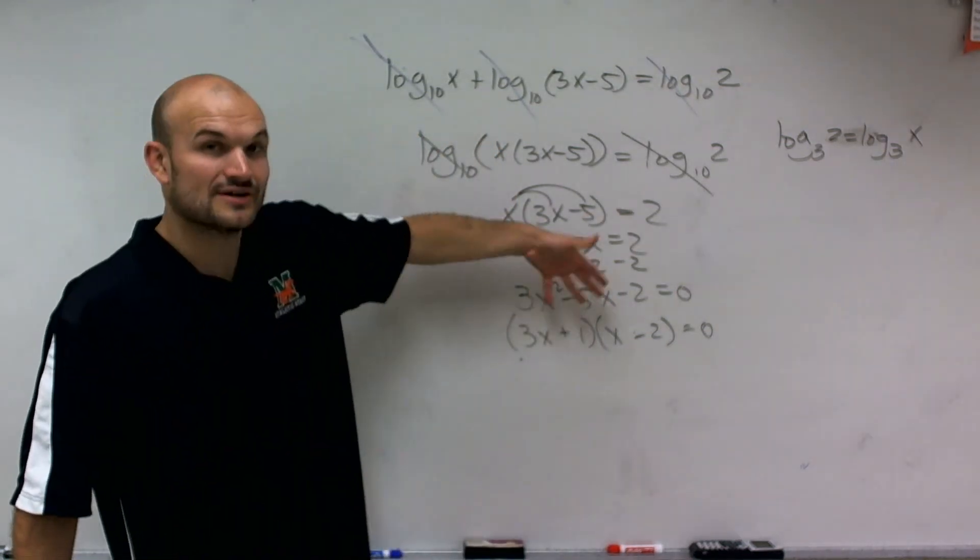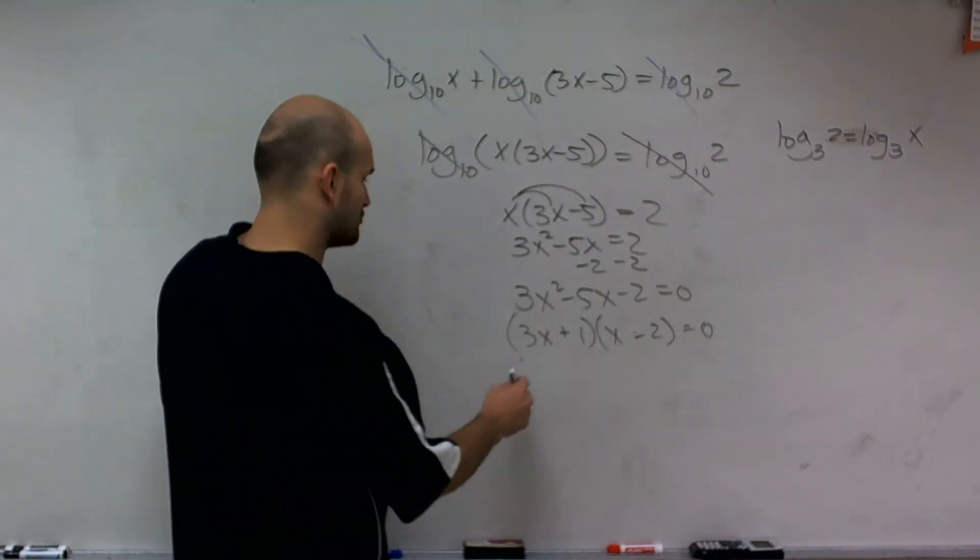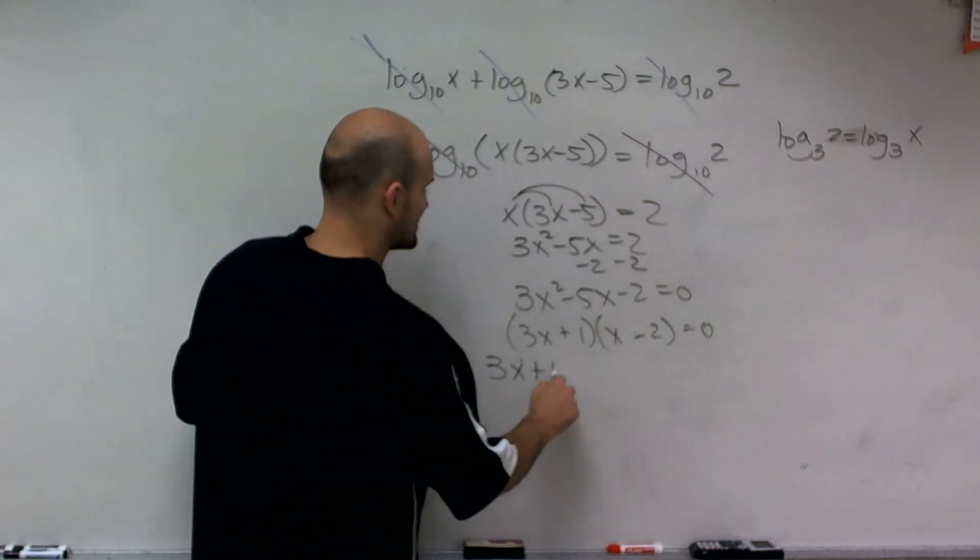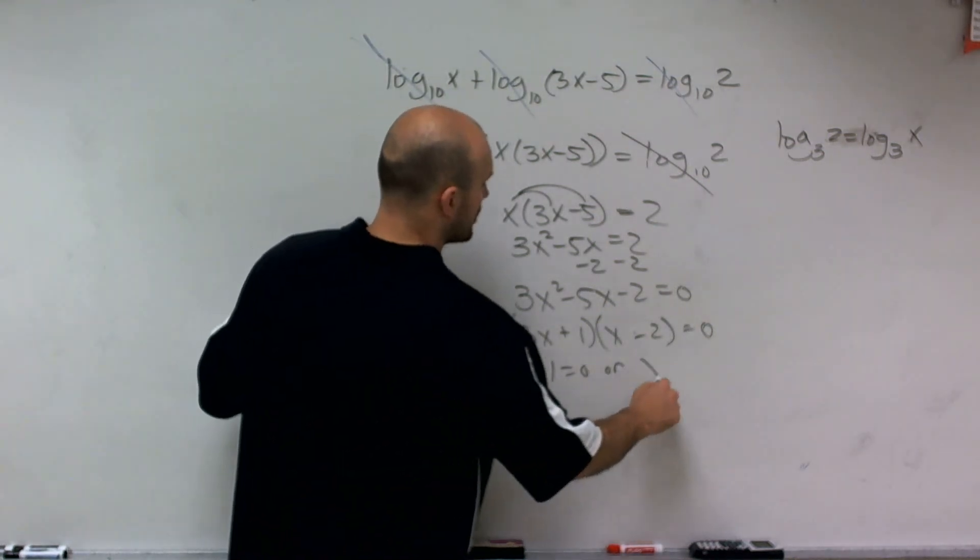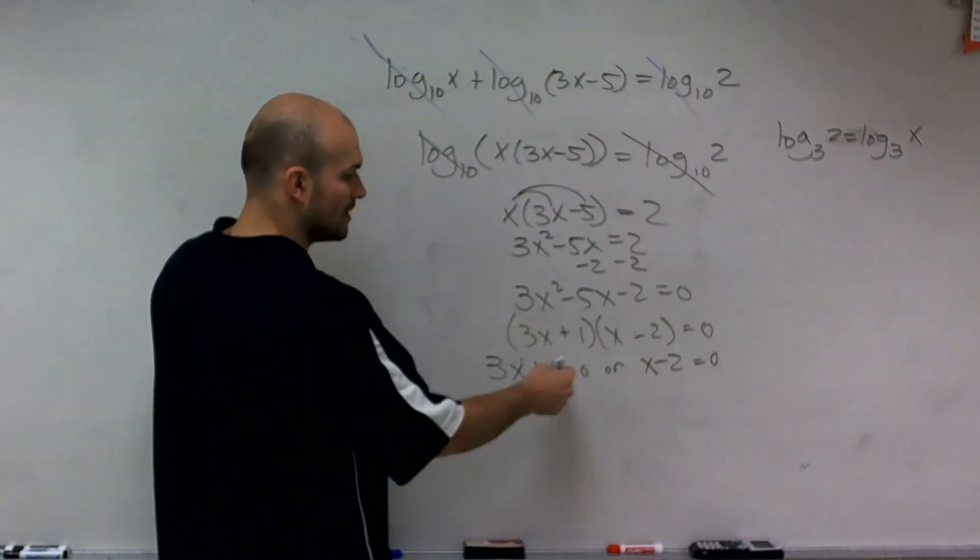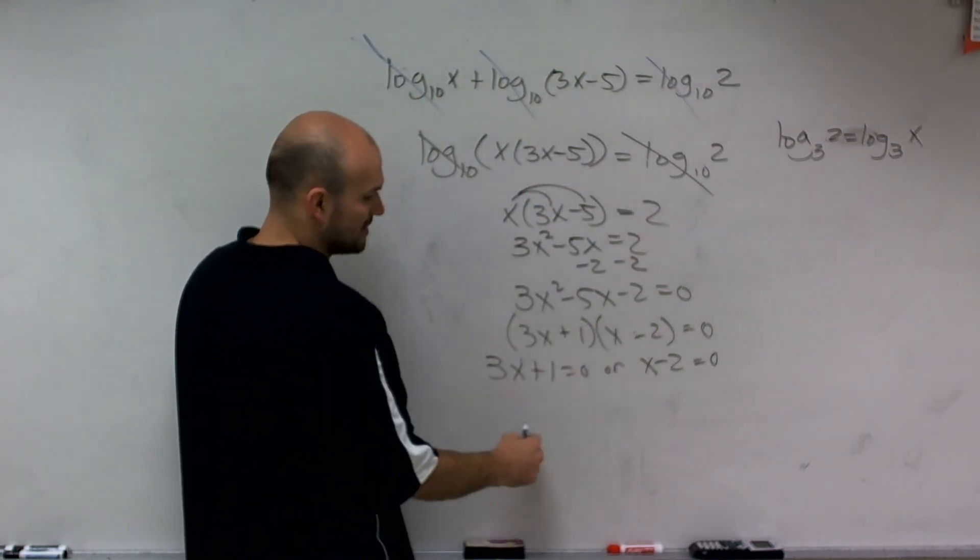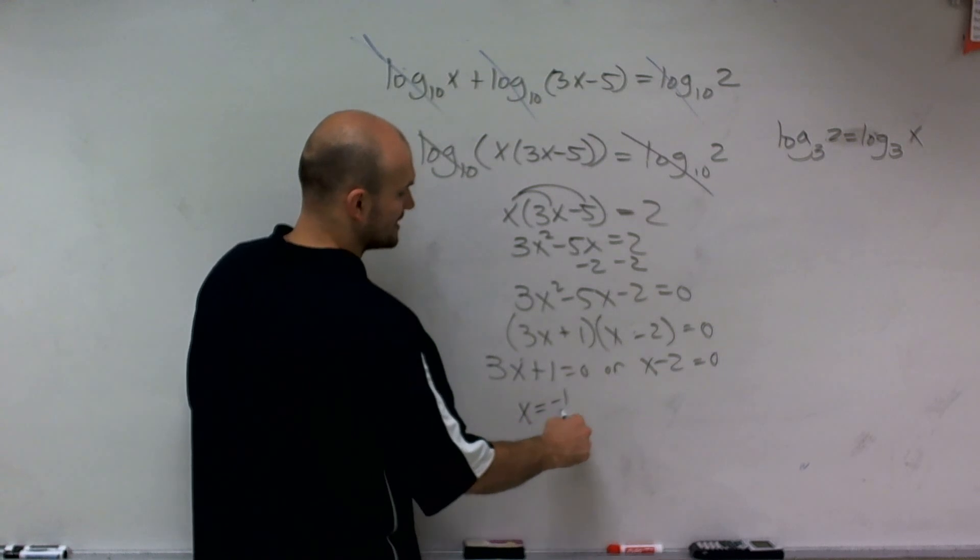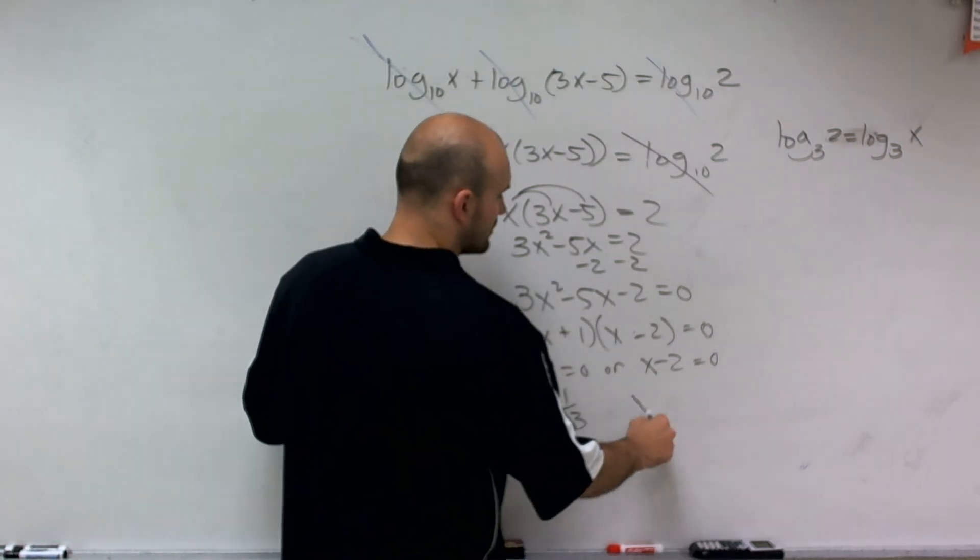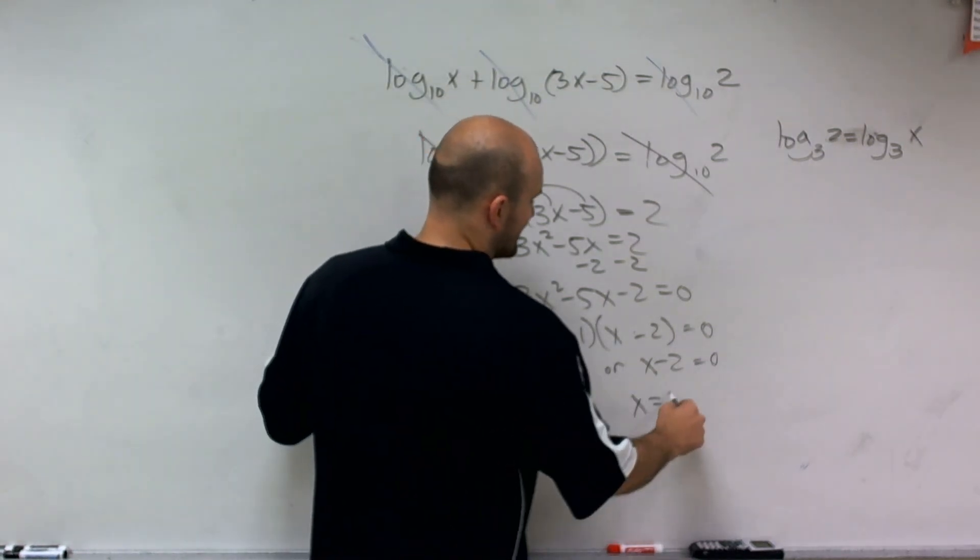Now, since I have it factored out equaling to 0, I can apply the zero product property, which states 3x plus 1 equals 0 or x minus 2 equals 0. Now, solving for x, I subtract 1, divide by 3, and I get x equals a negative 1 third. Or, adding x to both sides, I get x equals 2.